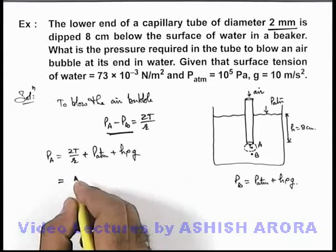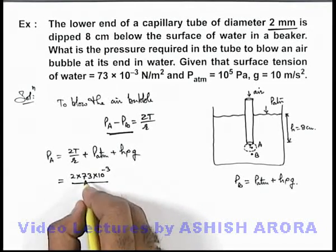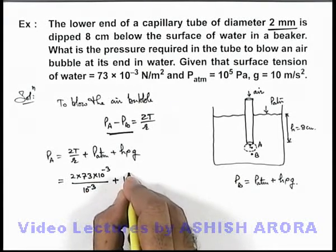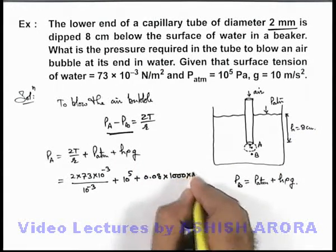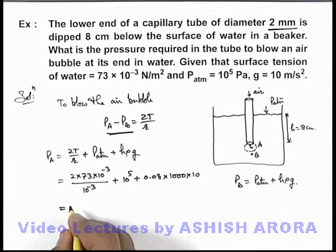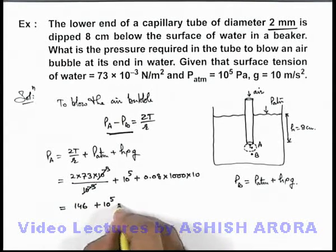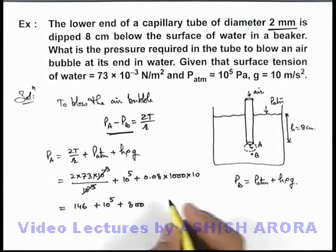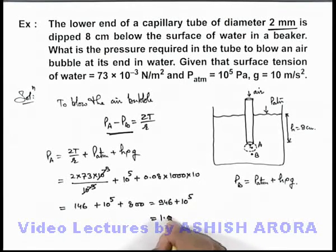We calculate by substituting the values. We can say it is 2 × 73 × 10^-3 divided by, we are given that radius is 1 mm here, so it is 10^-3 plus atmospheric pressure is 10^5. If we calculate h ρ g, it is 0.008 × 1000 × 10. If we simplify the result, in this situation, this will be 146 plus 10^5 plus this will be 800. On further simplifying, this will be 946 plus 10^5, so numerically it can be written as 1.00946 × 10^5 Pascal.